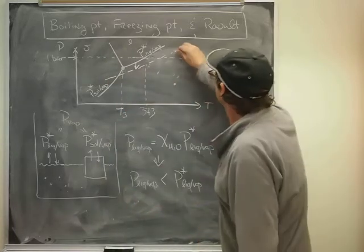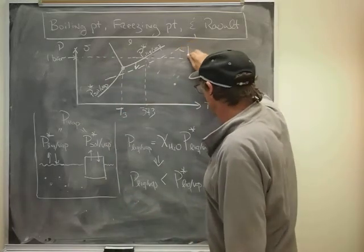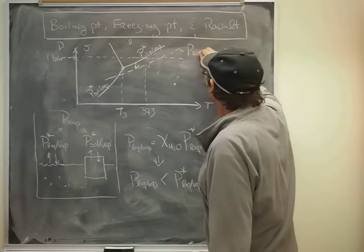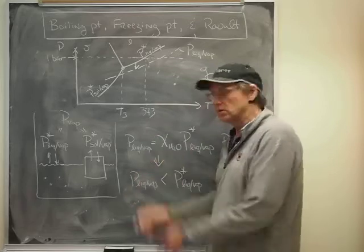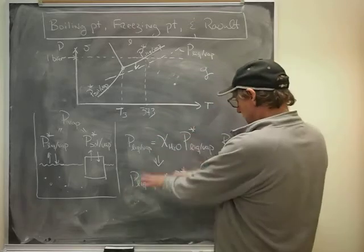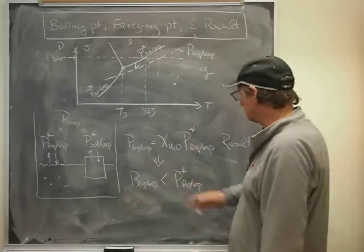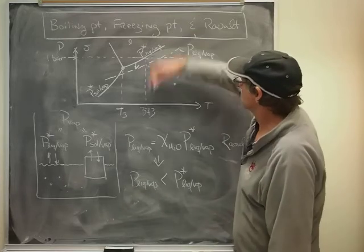And I can draw that on here. So I'm just going to take that very curve here and drop it down to there. So now what I've really drawn is the Raoult corrected P liquid vapor curve according to Raoult's law. Here, as you can see, it's a lower value than P star. So I've dropped it down.